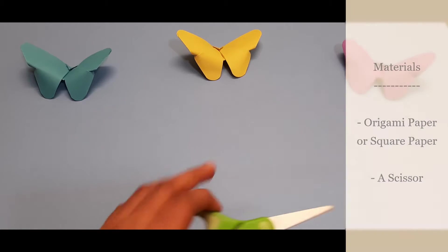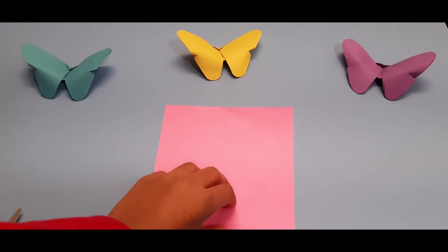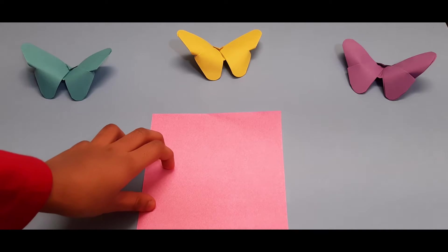For this you'll need a pair of scissors and a sheet of origami paper, such as this 15 by 15 centimeter. You can use any size you like. Let's begin. Start with the origami paper color side up.